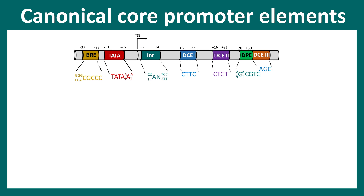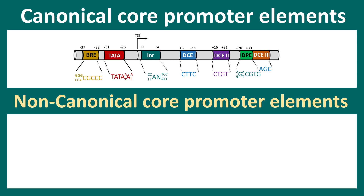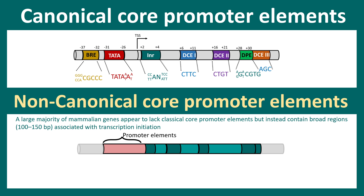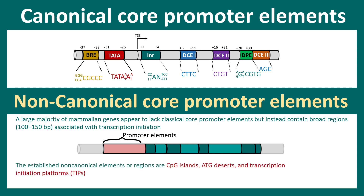Besides canonical core promoter elements, there are non-canonical core promoter elements that don't have any of the well-characterized promoter elements. They have a broad region designated as the core promoter, and include CPG islands, ATG deserts, and transcription initiation platforms (TIPs). It turns out the TATA box is present in only a very selected set of transcripts; it is most characterized, which is why we see it prominently in textbooks.